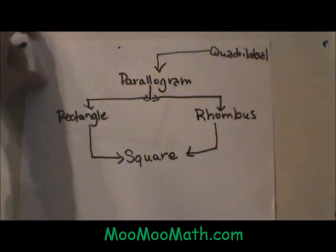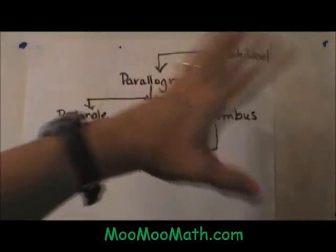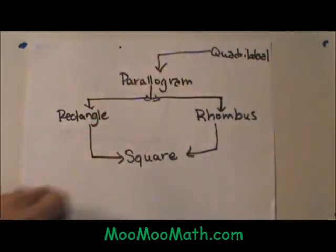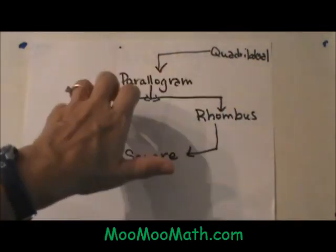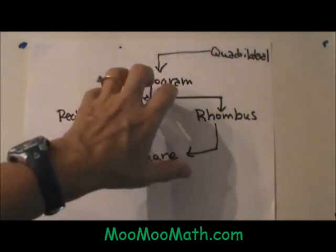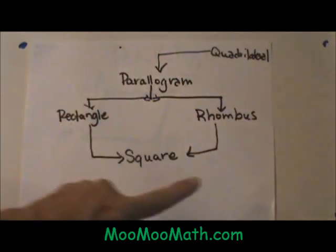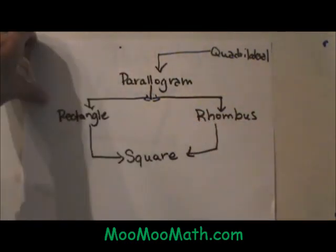There is another part of this diagram that we can't see, so we are looking at the side of the quadrilateral family that are all parallelograms. Under parallelograms fall these other three figures: a rectangle, rhombus, and a square.